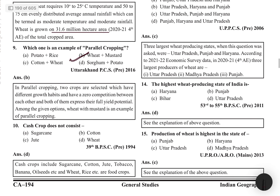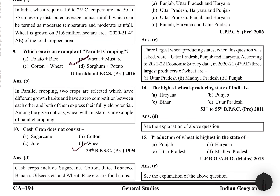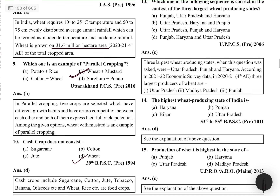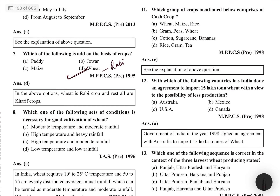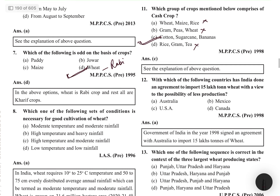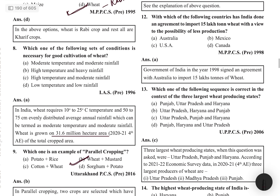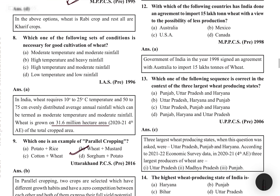Cash crops do not include wheat. Cash crops are sugarcane, cotton, jute, tobacco, banana, and oilseeds. Wheat and rice are food crops. MCQ: Which group comprises cash crops? Cotton, sugarcane, and banana are three cash crops. India has done an agreement with Australia to import 50 lakh tonnes of wheat, viewing the possibility of less production.